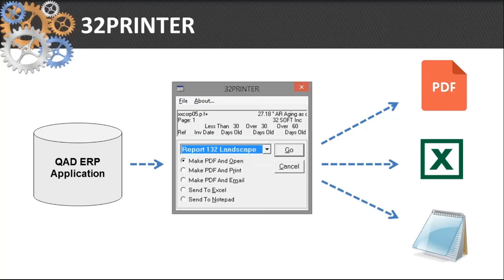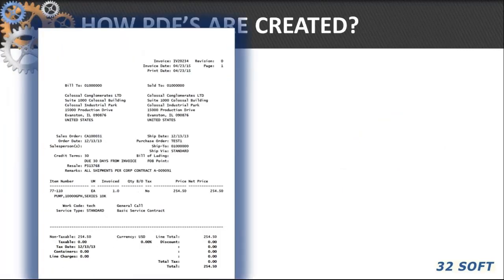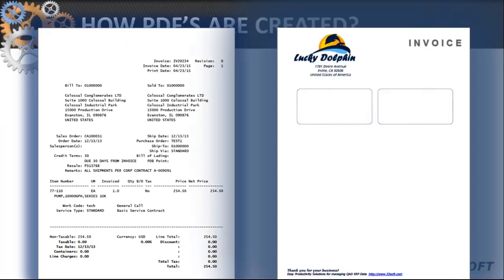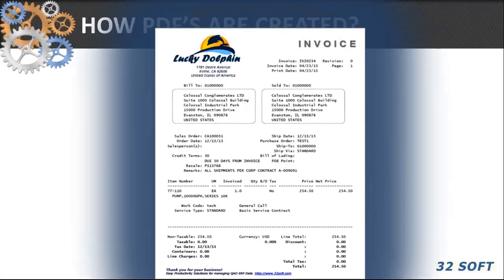32 Printer is one of our early products, built specifically to address this need. It's a desktop application and it converts QAD reports to PDFs and Excel. Let's see how exactly it creates PDFs: we have a QAD report on one side and a static PDF template on the other side. 32 Printer merges them together — it simply overlays the template with the QAD data.